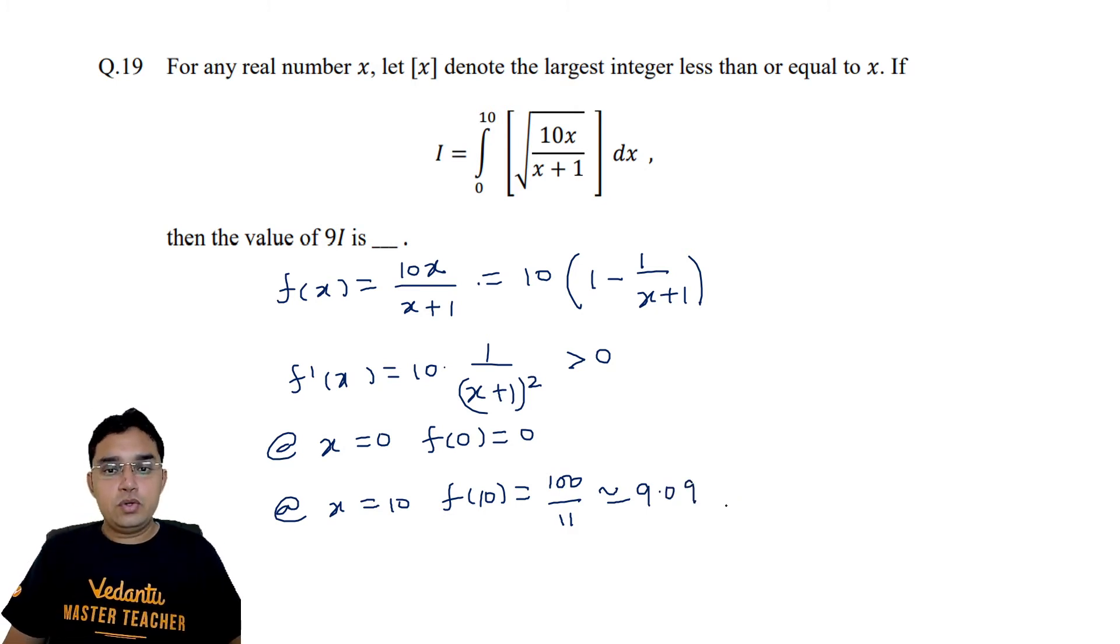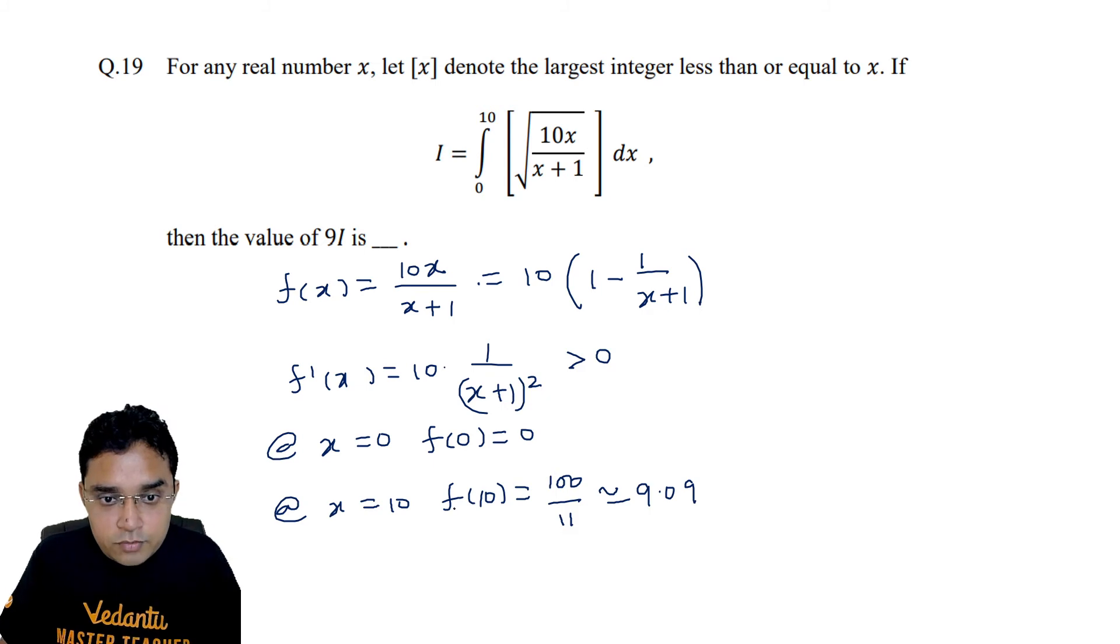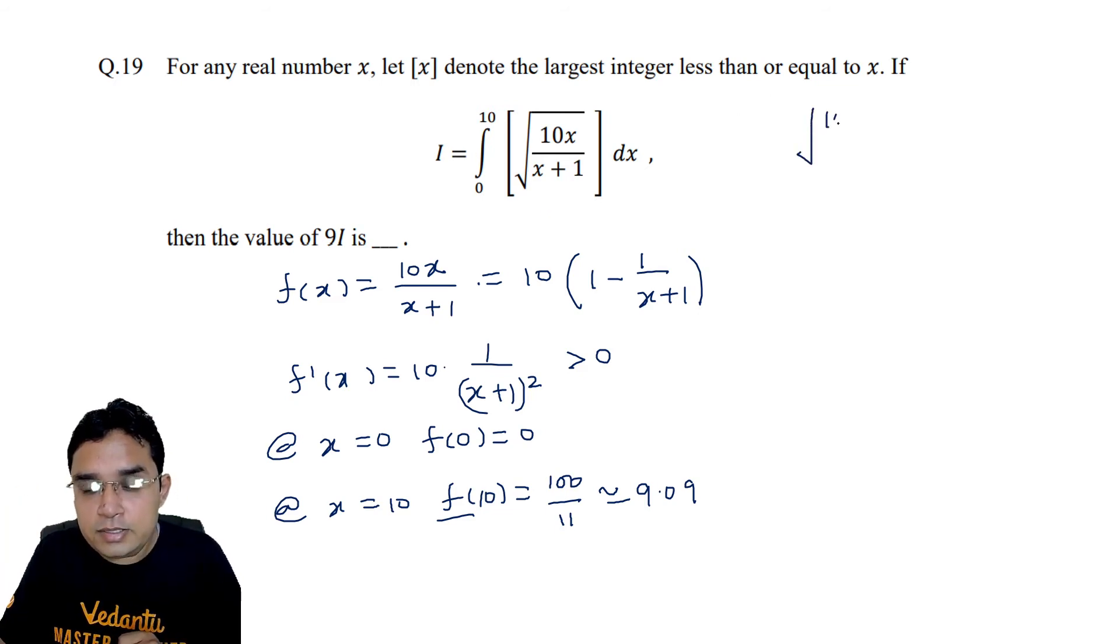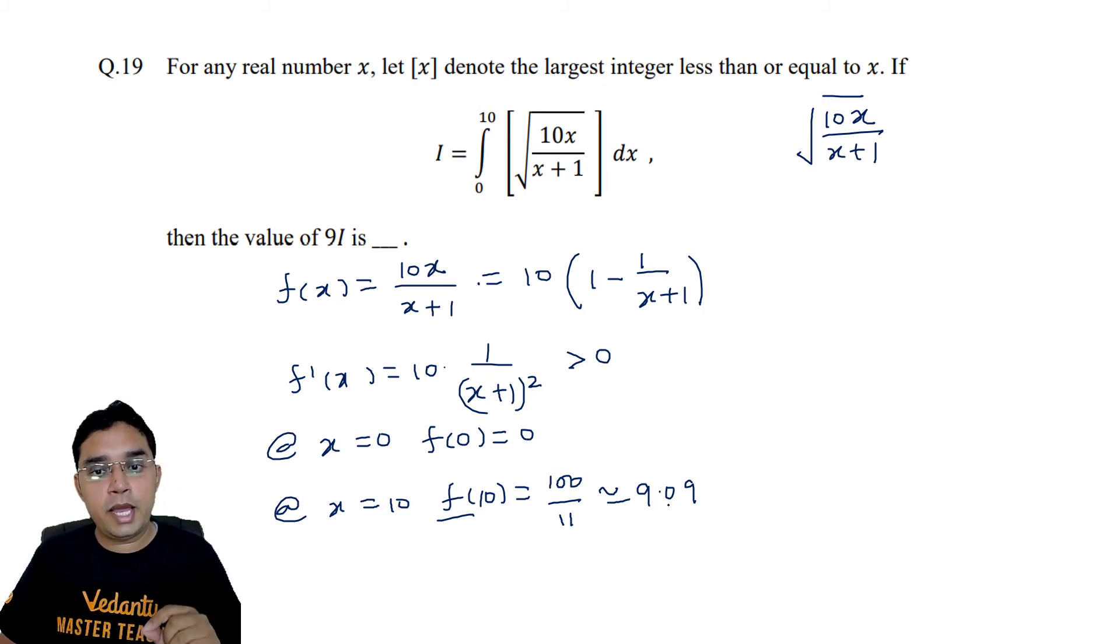So the square root of this f(10) will be slightly bigger than 3. Now because we are given an integral with the greatest integer sign on some function, we have to understand when this square root of 10x/(x+1) will take integral values. Because f function is taking values from 0 to 9.09 only.